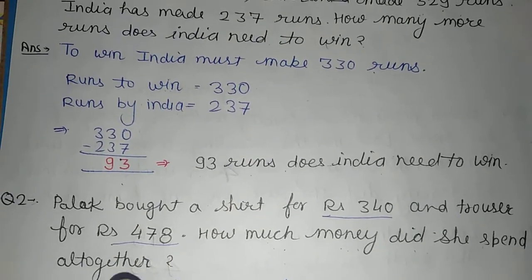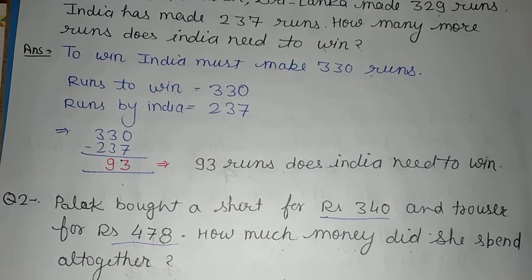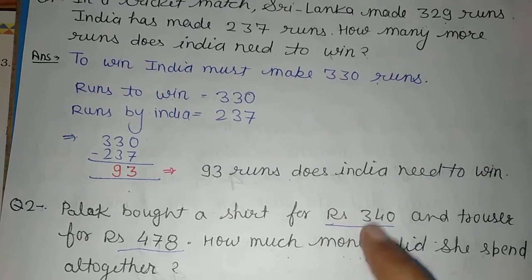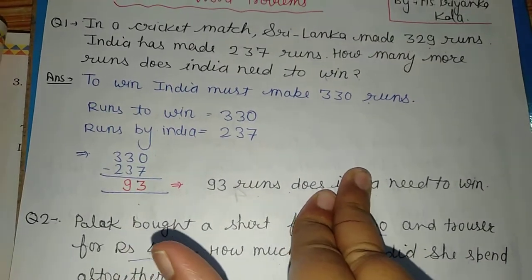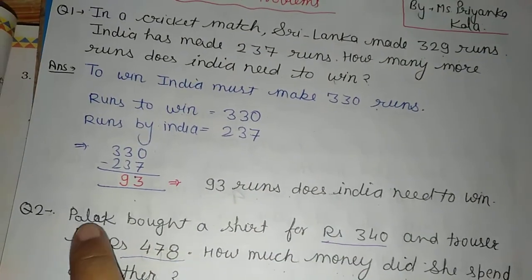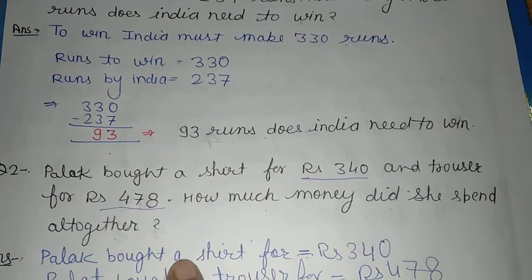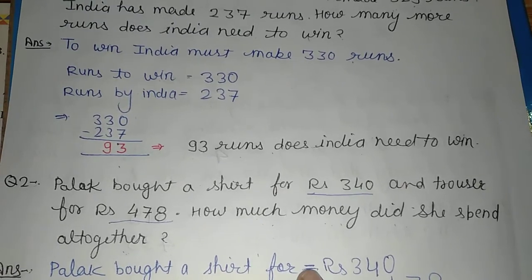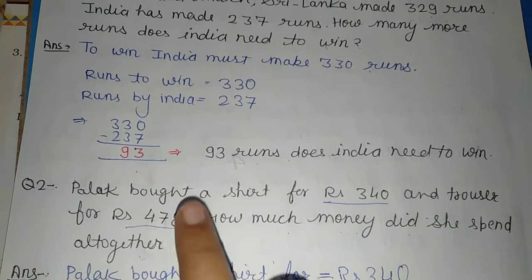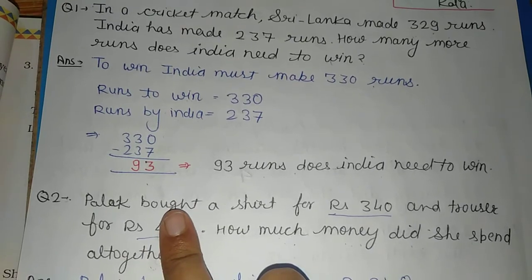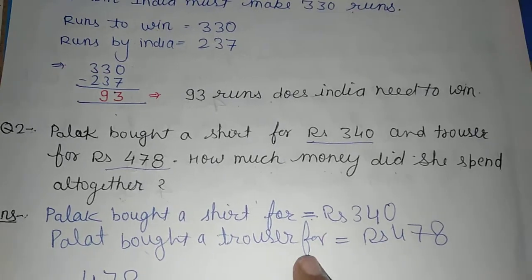Total — how much money did she spend altogether? So the statement is: 'Palak bought a shirt for' — equals to 340. This is the same way — I have written the number for another statement: 'Palak bought a trouser for' — equals to 478.